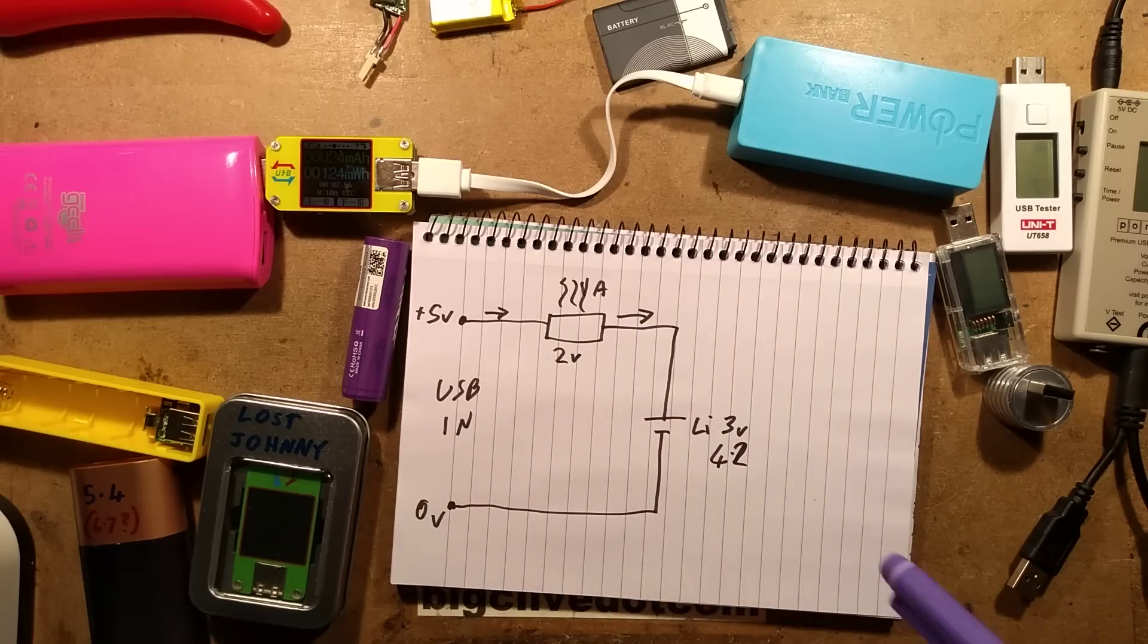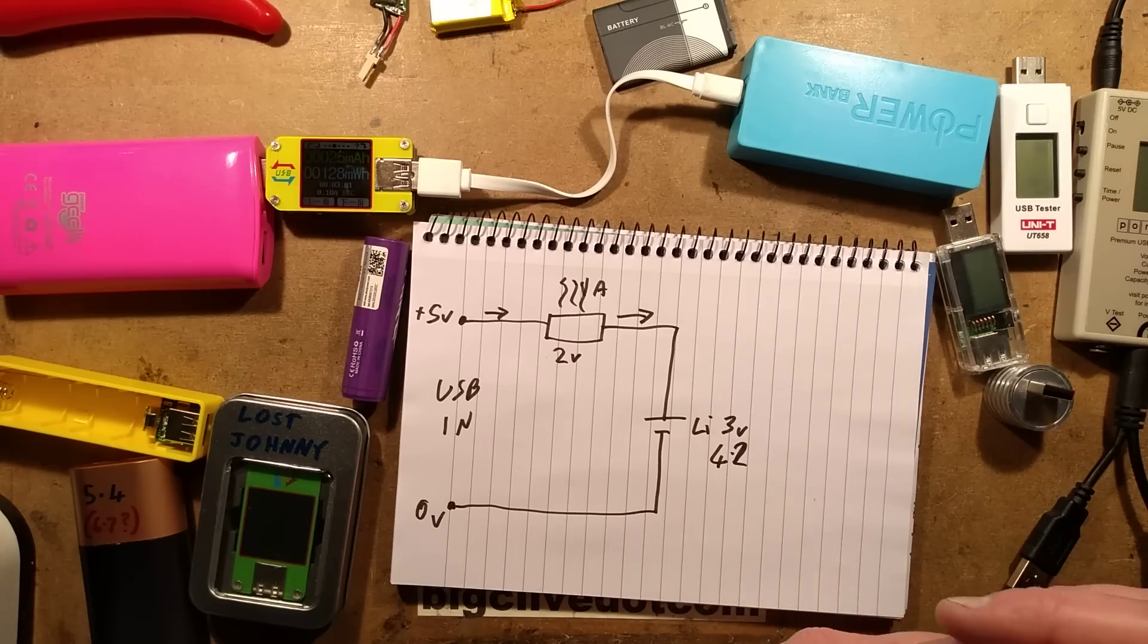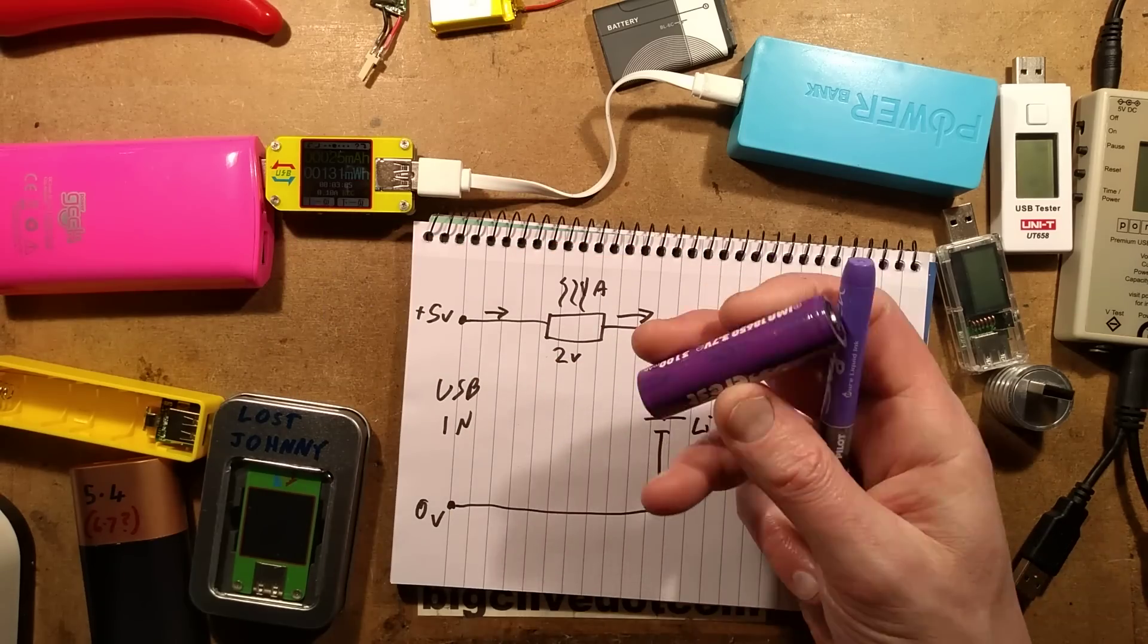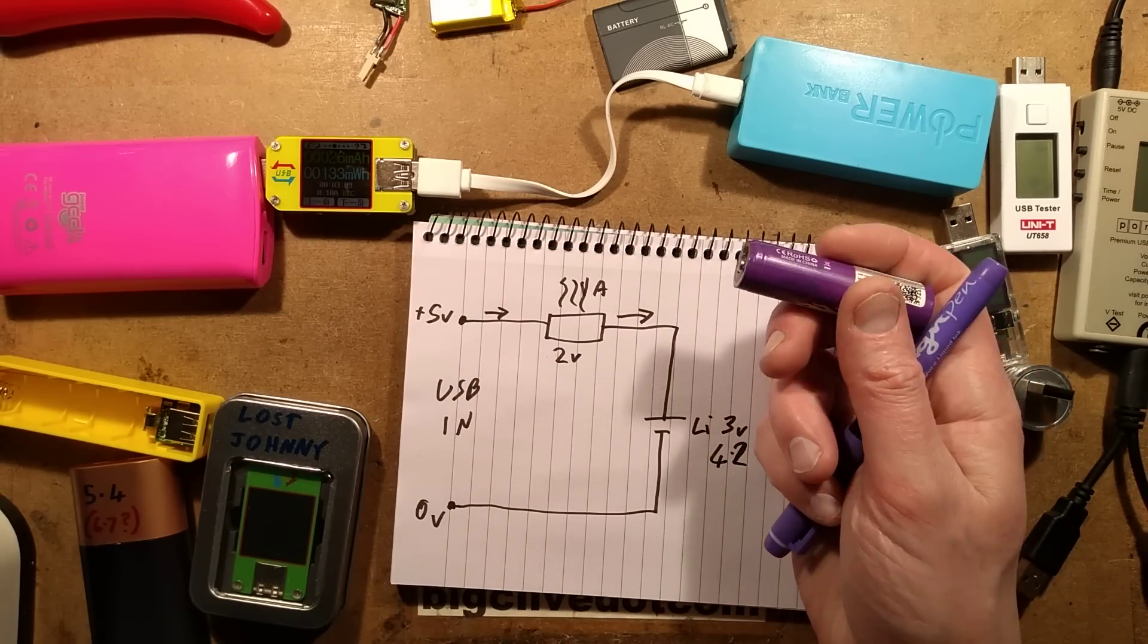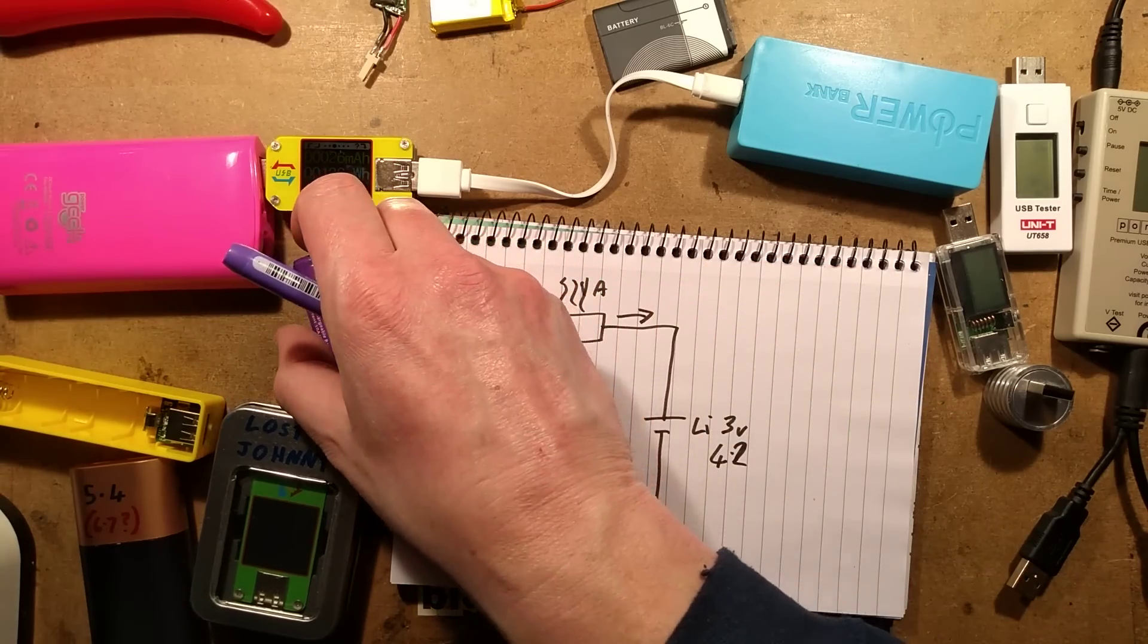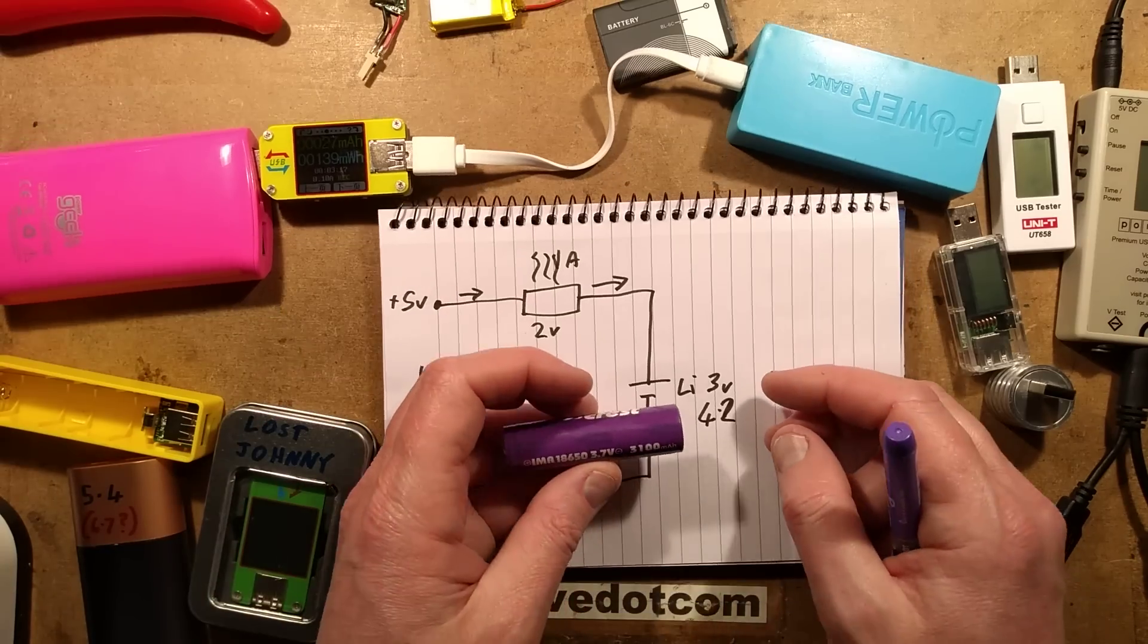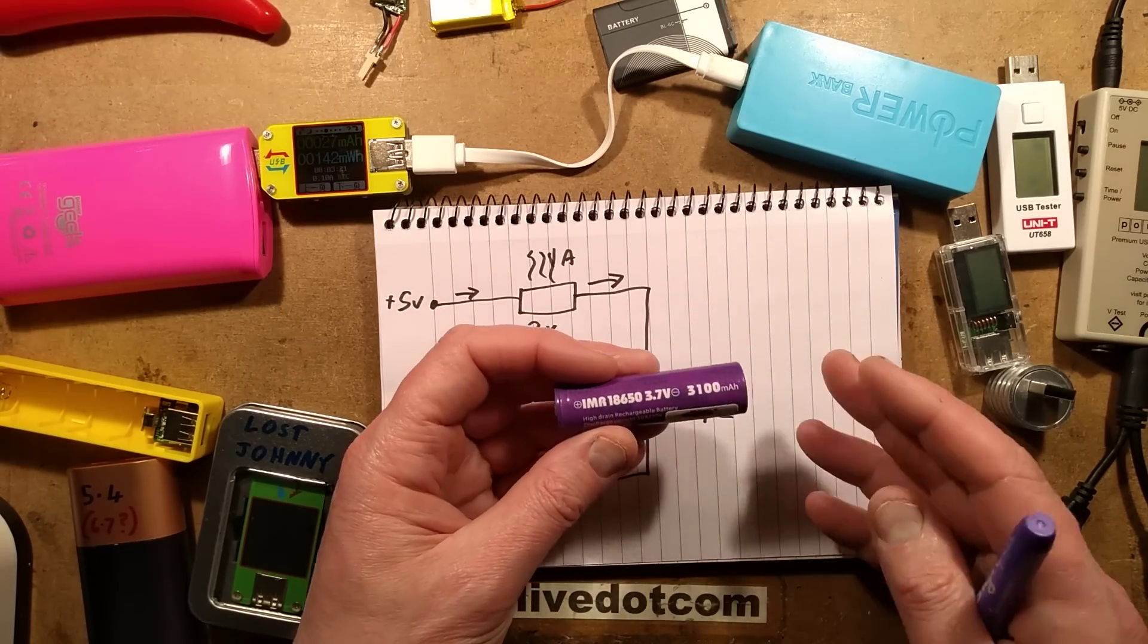You might say, what about the losses in the lithium cell? Well, the amazing thing about lithium cells is they're just ridiculously efficient. If you put 1 amp for an hour into this cell, you're pretty much going to get most of that 1 amp for an hour back out again. They're really impressive technology.